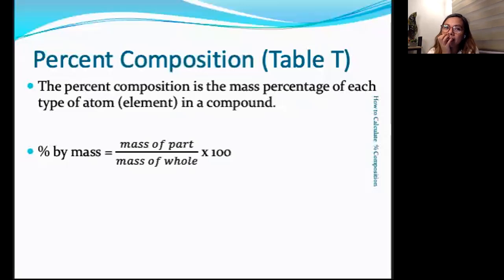So, the percentage, how do we get that? Mass of parts divided by mass of a whole times 100. Right? That's how we get percent by mass of a substance. So it's the mass percentage of each type of atom or element in a compound.